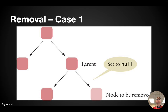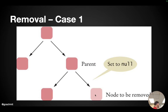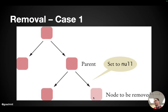This is case one. This is some subset, some subtree of our binary search tree. What we care about in this case is we find the node to be removed — that part of the algorithm will be familiar, we've already written code to find a node. The node to be removed is a leaf node — that's what makes case one special.